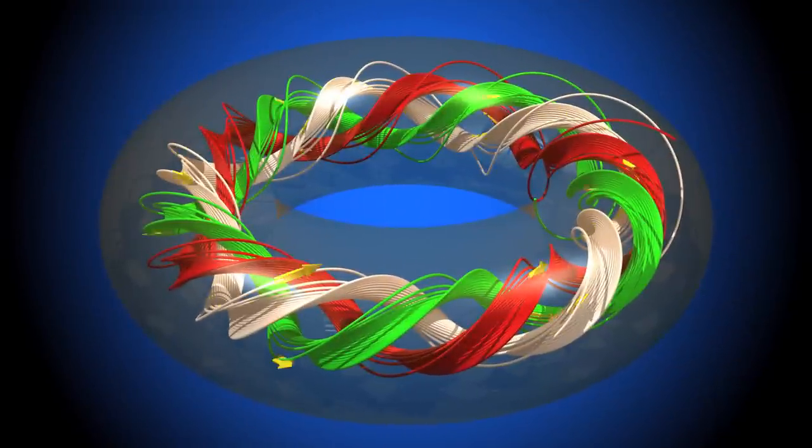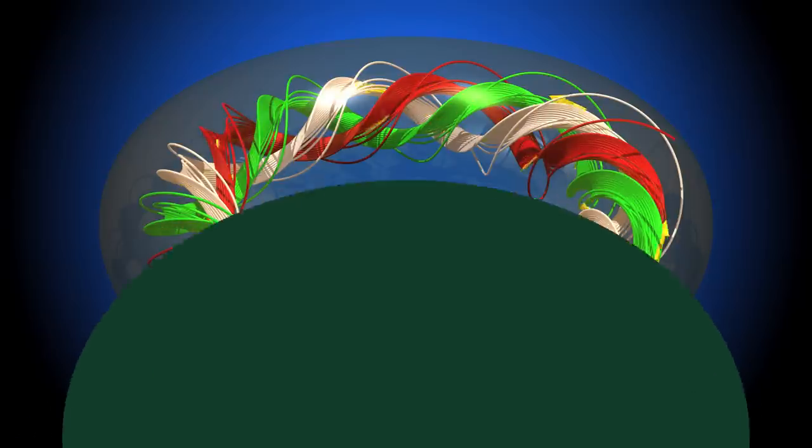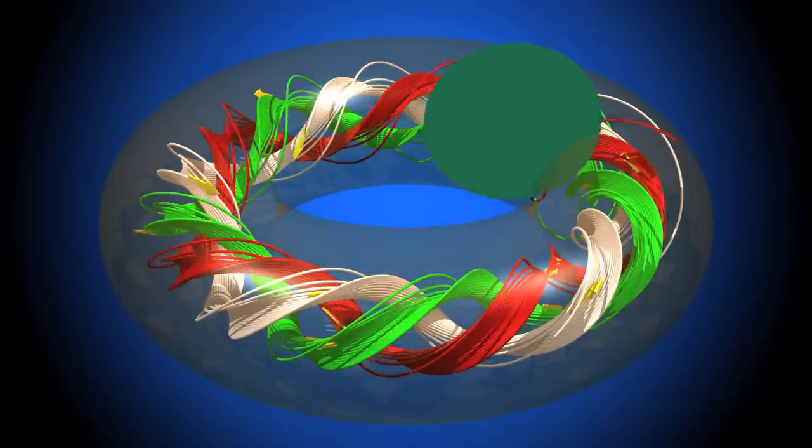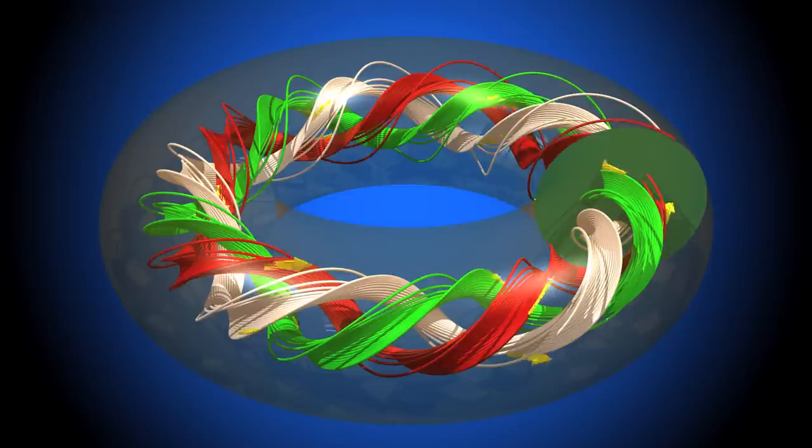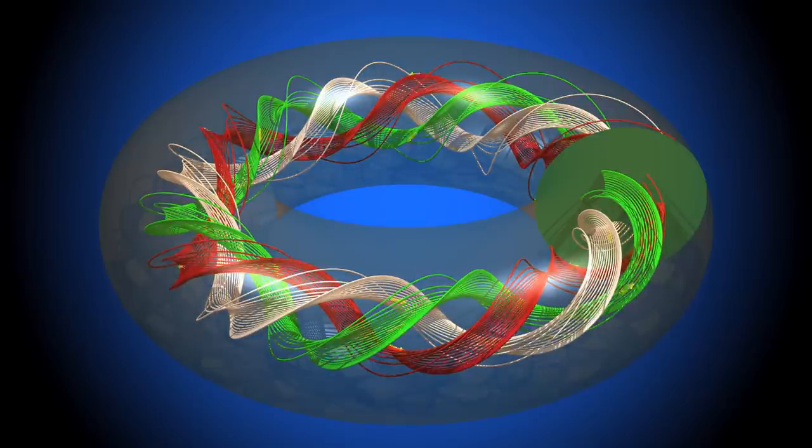We must first explain an old idea dating back to Poincaré. Here is a vector field in space. A trajectory that starts on the green disk must travel all the way around before returning to the disk and then taking another trip and so on.